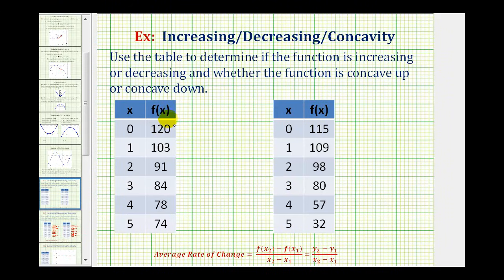We want to use the table to determine if the function is increasing or decreasing, and whether the function is concave up or concave down. To determine if the function is increasing or decreasing, we need to see if the function values increase or decrease as x increases. Looking at this first table, notice as x increases, the function values are decreasing each time, and therefore this table represents a decreasing function.